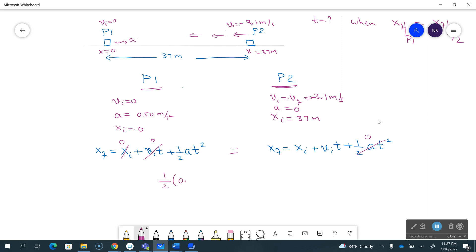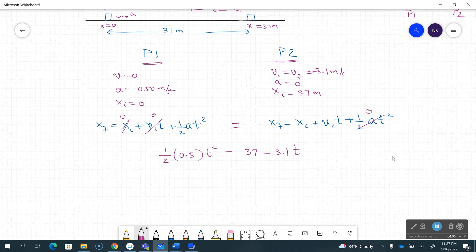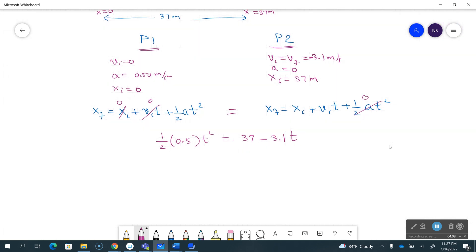So what I have here is one half of acceleration which is 0.5 meters per second squared times t squared is equal to the final position, xi initial position is 37 meters plus vi*t, and vi is negative 3.1 times t. So now it just became a quadratic equation and we all know how to solve that.